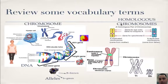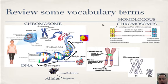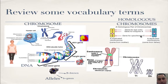Homologous chromosomes are the same size and shape, have the same banding patterns, and carry the same genes. One comes from mom and one from dad. You have homologous chromosomes in a diploid cell, not in a haploid cell — so only in body cells.